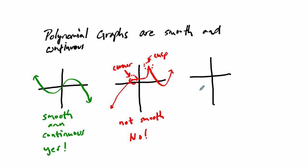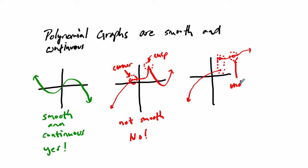Finally, we look at a graph that's smooth, and then all of a sudden maybe stops here, bounces up, then has an open circle and a break, and then it goes on. So this is smooth except at this spot where the graph is undefined, and this spot where it breaks. So we have an undefined spot and we have a break — this is not continuous. Continuous means there are no holes or breaks, so this is not a polynomial function.